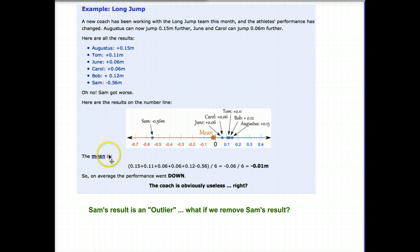So let's calculate the average, the mean. So if we add up all the scores, or all the increases in distance, except for here we have a decrease, divide by the number that we have, we get an overall average decrease of 0.01 meters. So how effective is this coach? Everybody's performance went down on average, right? So is the coach useless?